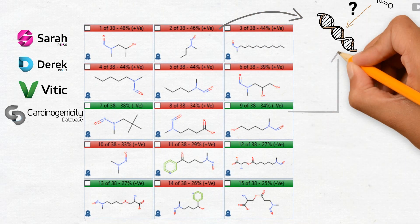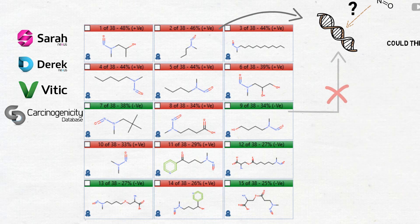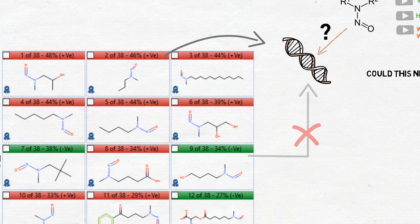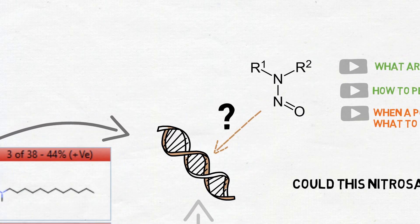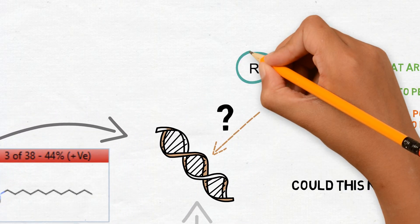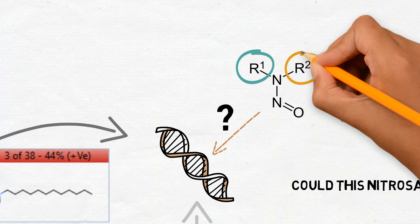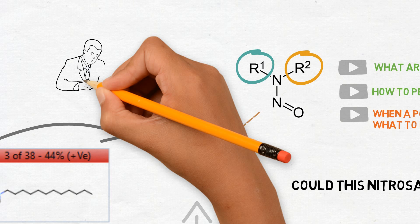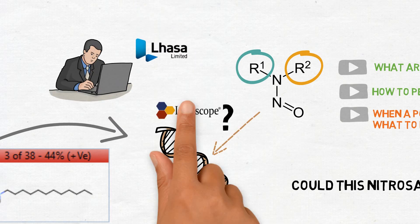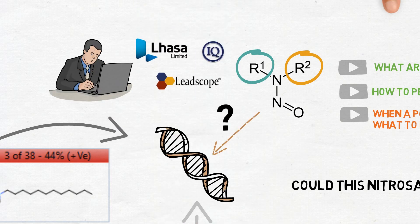The mechanism of the reaction which leads to mutagenicity, that is, which causes the nitrosamine to react with the DNA potentially causing a mutation, requires some structural aspects which are not always present in the impurity. Some groups are studying these alerts to help the industry identify the cases which are in fact of concern.